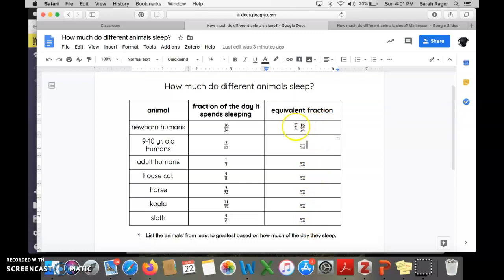Stick with me here. Looking at a newborn human we can see that babies sleep 16 24ths of a day meaning they sleep 16 hours out of every 24 hour day. That's a lot of sleep. The fraction of the day the newborn human sleeps was already given to us with a denominator of 24. So we don't need to make a new equivalent fraction. Our job on this one is done.